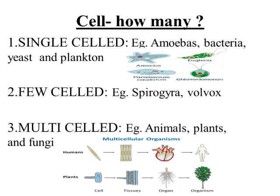Now we will discuss few-celled organisms. Some very small plants and animals are made up of a relatively few number of cells — just a few hundred to a few thousand cells — and these are known as few-celled organisms. For example, spirogyra and volvox.